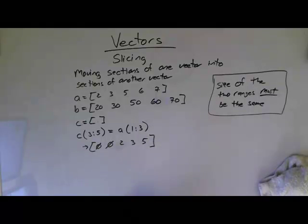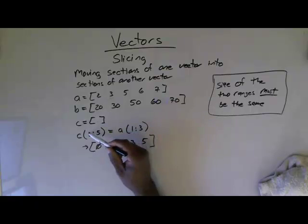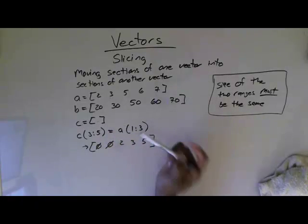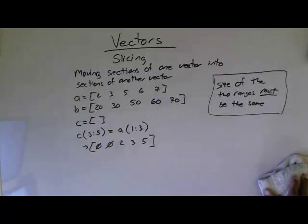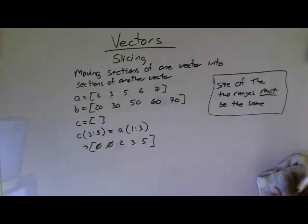Now, C is now empty, but MATLAB is smart enough that what it's going to do, it's going to pad C with zeros until it gets to the third element, and then it's going to put A at 1, 2, and 3 in the vector. And so you wind up with that. So you can even start off with something empty, give it a range that is not at the beginning, and as long as these two are the same, it will pad with zeros until it gets to the range there. So that's the idea of slicing. Once again, that's moving sections of one vector into sections of another, and the sizes of the two ranges must be the same.